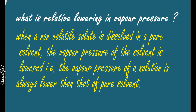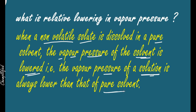The first colligative property is relative lowering in vapor pressure. When a non-volatile solute is dissolved in a pure solvent — non-volatile meaning a substance that does not evaporate easily — the vapor pressure of the solvent is lowered. This means the vapor pressure of the solution is always lower than that of the pure solvent.